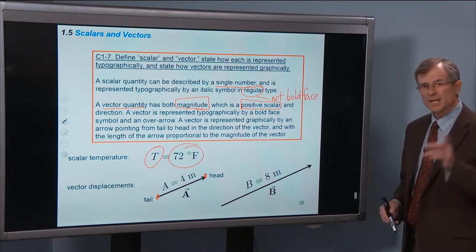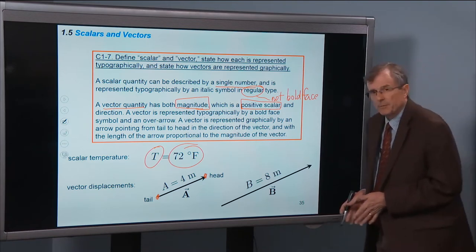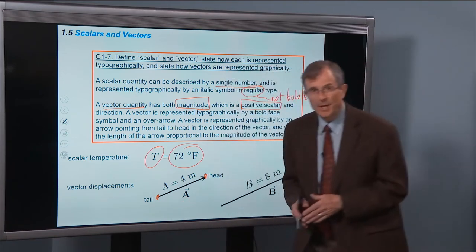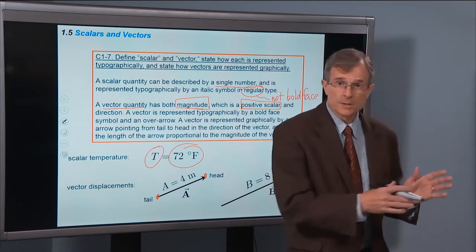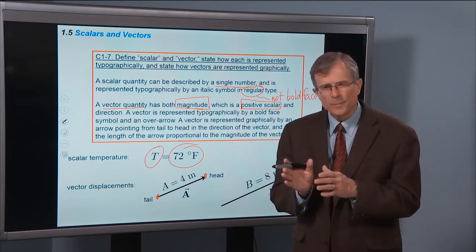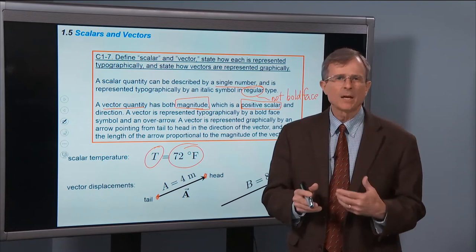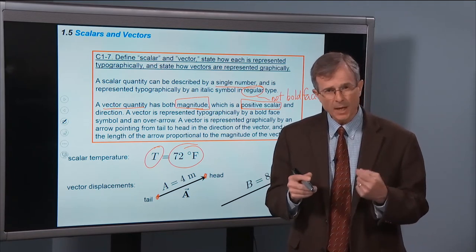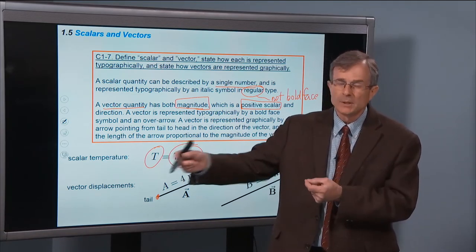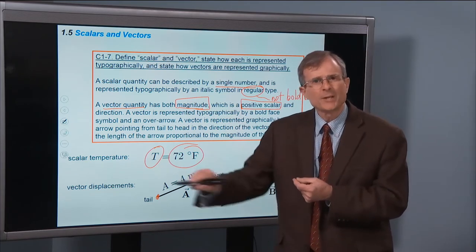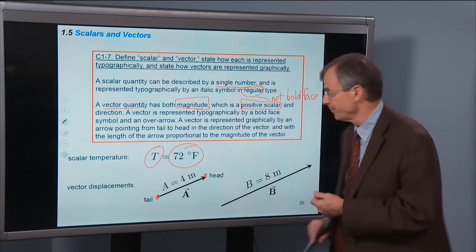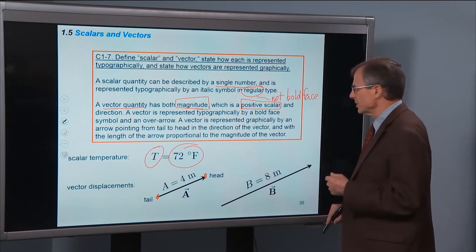That displacement has a particular direction. Because I'm going this way, I'm not going this way or in some other direction. To fully characterize that displacement, I need not only the distance that I travel, but also the direction that I traveled in. That's where vectors come in.